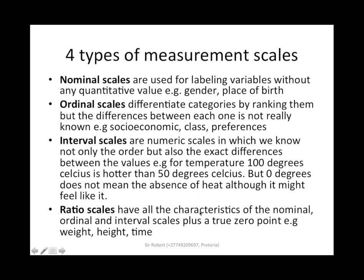Interval scales are numeric scales in which we know not only the order but also the exact difference between values — e.g. temperature: 100 degrees Celsius is hotter than 50 degrees, but 0 degrees does not mean the absence of temperature; it is still there, just low. Ratio scales have all the characteristics of interval scales plus a true zero point — e.g. weight. If something has no weight, it is truly 0. The same applies to time, height, and similar measures.